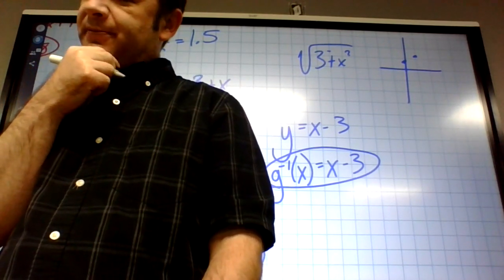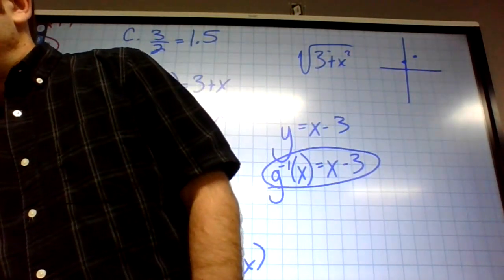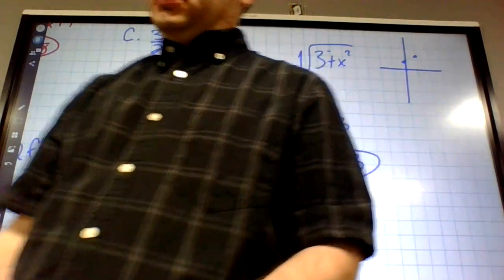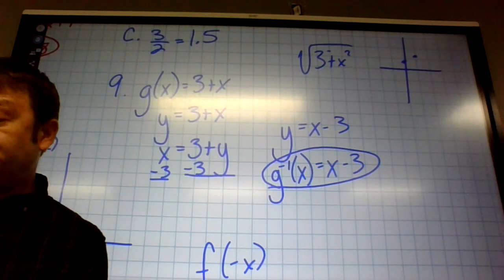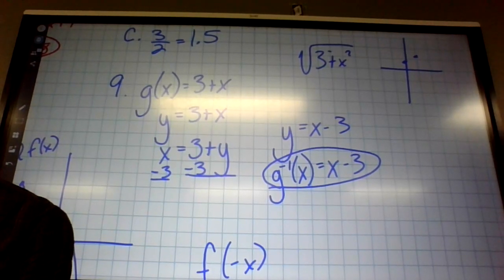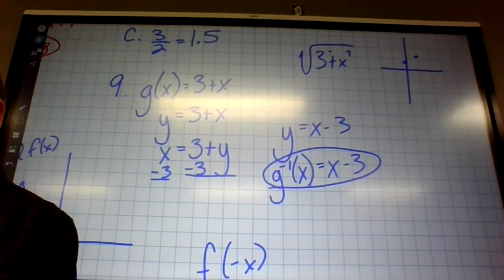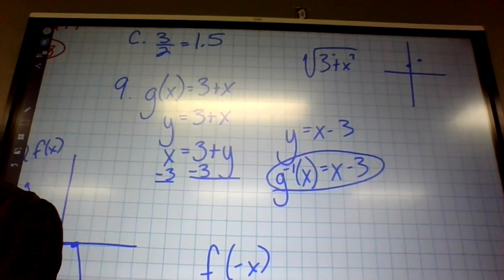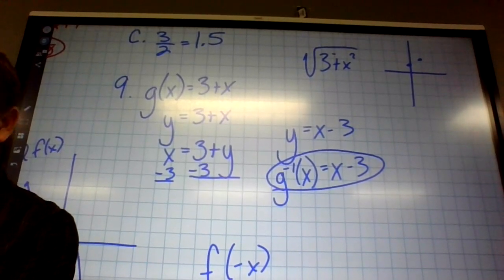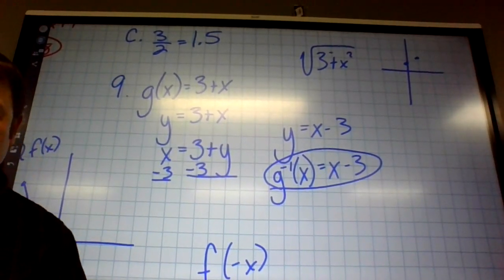For the b part — the other function doesn't have an inverse. It's not one-to-one and it fails the horizontal line test. I'm not sure I put number 10 on the test — it's a bit of a mess. Maybe instead I'll put one of those word problems from the worksheet. Anyway, we're about out of time.